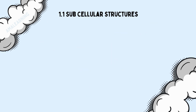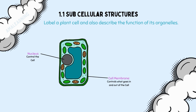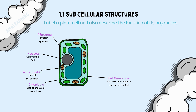In exams, you will need to know how to label a plant cell and describe the function of its organelles. Starting with the organelles also found in animal cells: the nucleus controls the cell; the cell membrane controls what goes in and out of the cell; the cytoplasm is where chemical reactions occur, where you would find the ribosomes and the mitochondria. The mitochondria is where respiration occurs, covered in more detail in topic 8. The ribosome is where protein synthesis occurs.